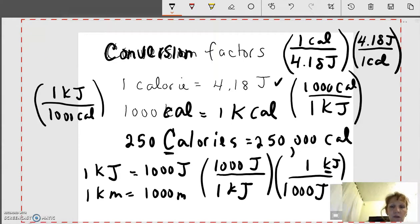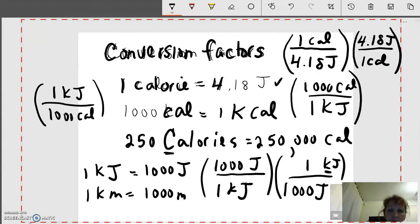Conversion factors are ratios and they're equivalent to one. Again, one little calorie is equal to 4.18 joules. So a joule is smaller, right? If it takes four to make one little calorie. By the way, one little calorie is very small. It's a very small amount of heat.